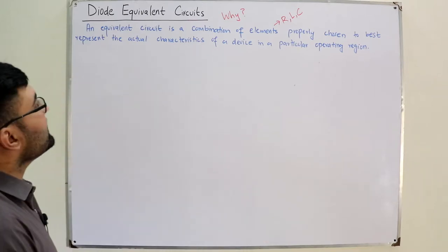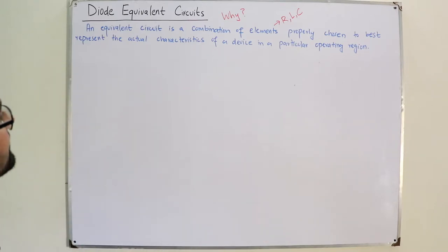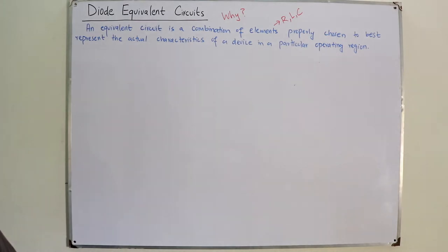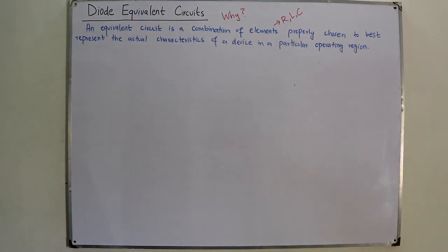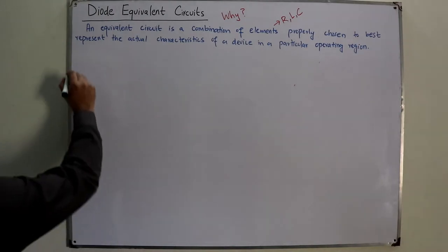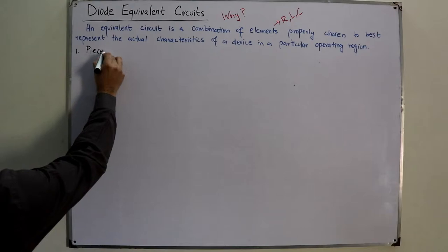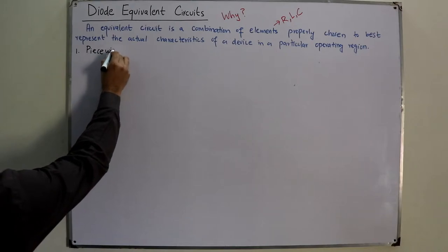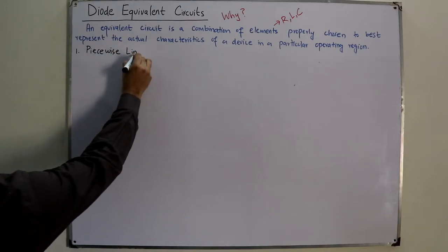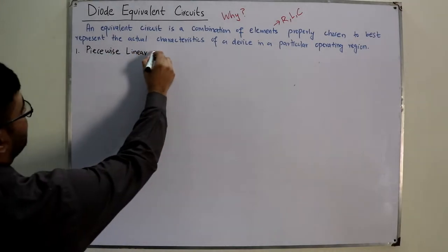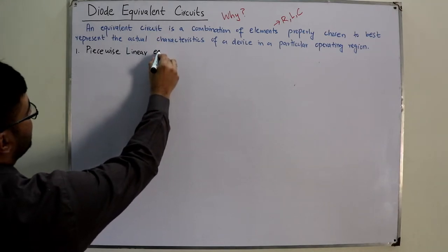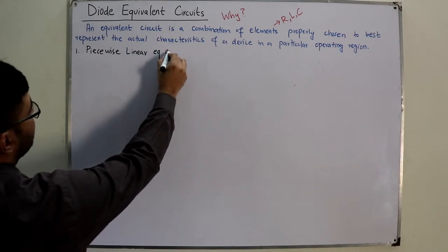This is the basic definition. Now, we have three equivalent circuits in our book. The first is the piecewise linear equivalent circuit.